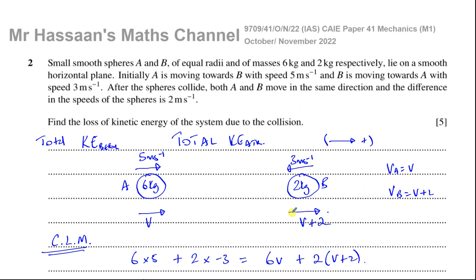A common mistake is not knowing which sphere to assign v and which to assign v plus two. You need to realise that because A has the bigger mass and bigger speed, after the collision both spheres go in A's original direction. A cannot be going faster than B after the collision, because B is in front of A — A can't pass through B. So B must be the faster one, with speed v plus two, and A has speed v.